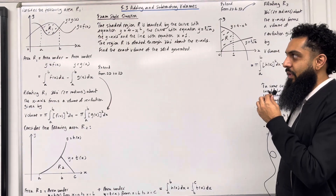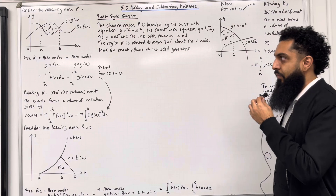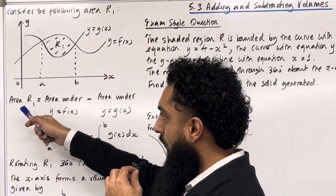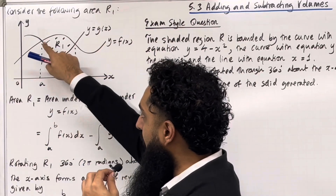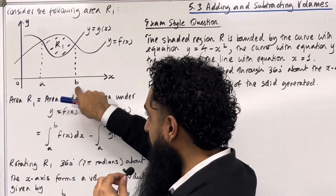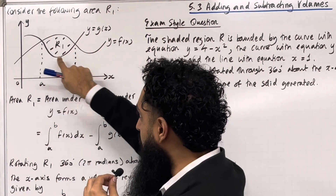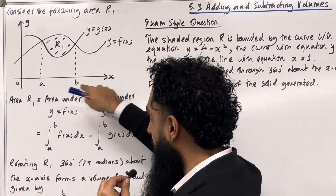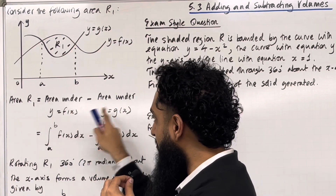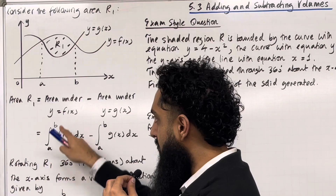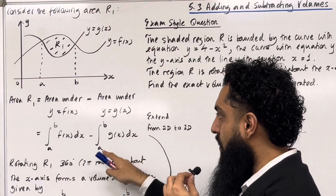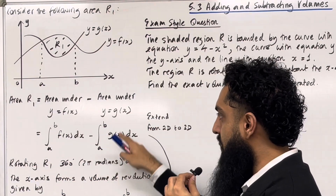Let's have a look at the key facts of this section. Consider the following area R1. Area R1 is equal to the area under the curve y = f(x) from a to b, take away the area under the curve y = g(x) from a to b. So I can formalise this as the integral from a to b of f(x) dx, take away the integral from a to b of g(x) dx.